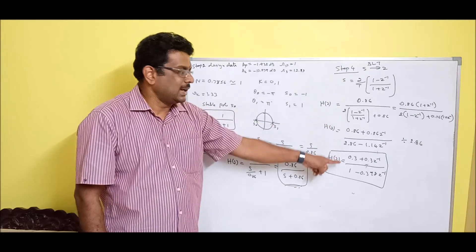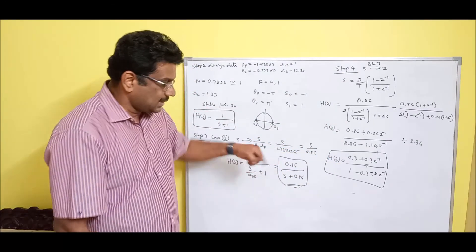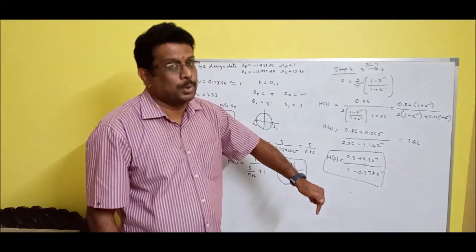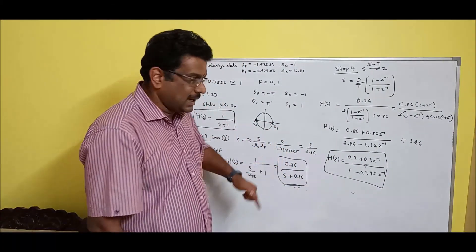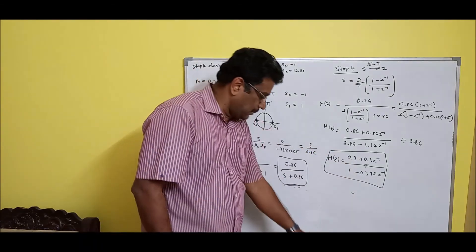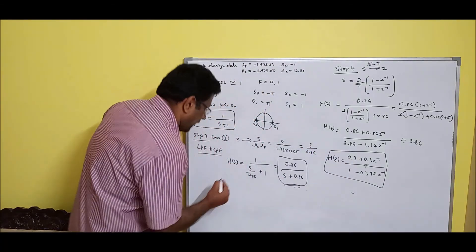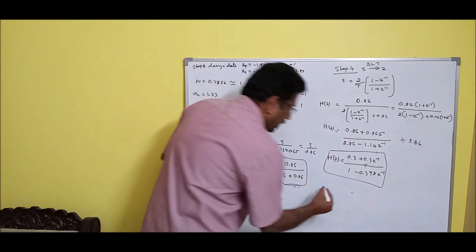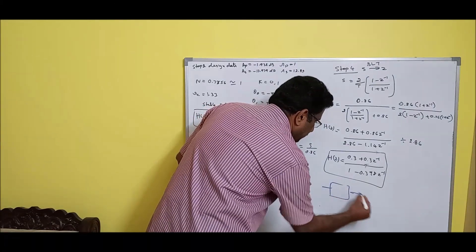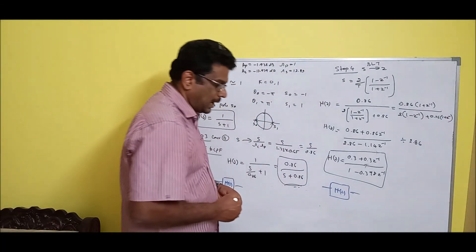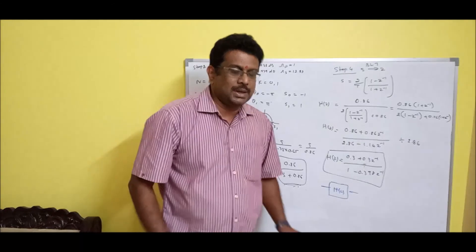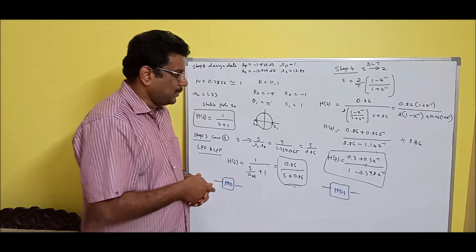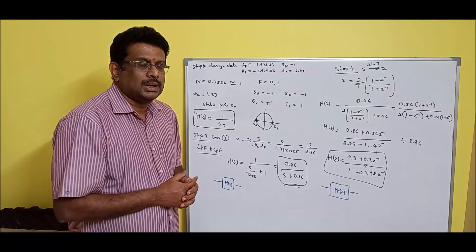To summarize: the H(s) result is the analog filter — its diagram is a circuit. The H(z) result is the digital filter — its diagram is a program (flowchart). The flowchart design will be covered in the next session. Thank you.